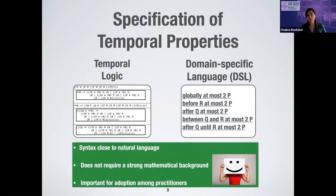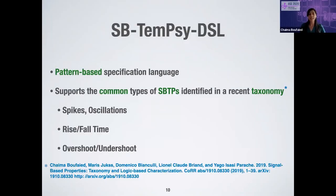SBTAMC DSL is a pattern-based specification language that supports the most common types of signal-based temporal properties, identified in a recent taxonomy. It characterizes and defines spikes, oscillations — the most complex behaviors — as well as rise time, fall time, overshoot, and undershoot of the signal.